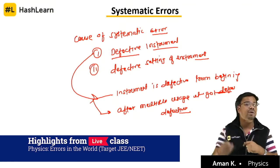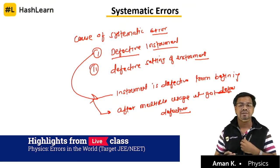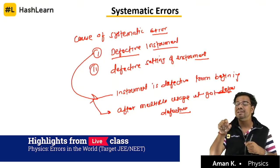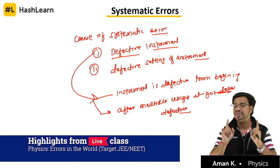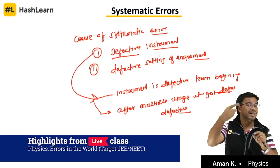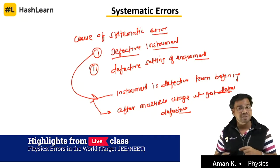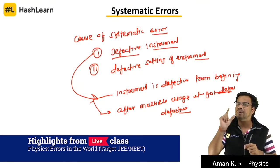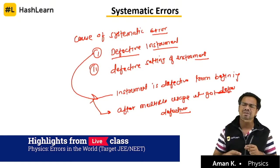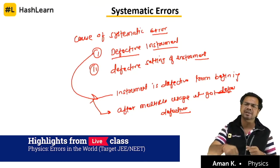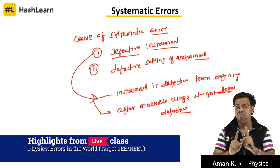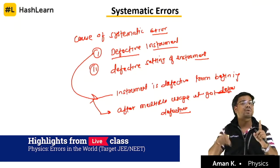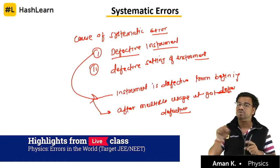When you measure the temperature, you will get 9.9 degrees instead of 10 degrees. So here you are getting a constant amount of error always. Whenever you measure through that defective thermometer, you will always get a constant amount of error all the time — even if you measure 10 times, you will get the same amount of error every time.